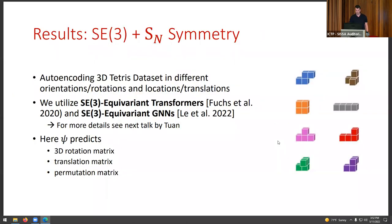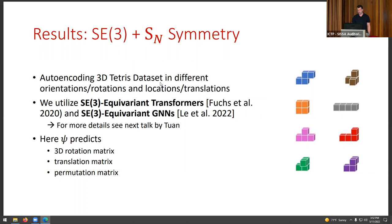A more complicated example is in three dimensions, where we also include the symmetric group to handle permutations. Here we look at a toy dataset of tetra shapes in three dimensions, encoding different orientations and rotations. We utilize SE(3)-equivariant networks like the transformers proposed by Fuchs et al. or equivariant GNNs developed by Tuan — who will talk more about them next. It's slightly more complicated here because we also have to predict not only the rotation but also the translation matrix and permutation matrix, as these are the group elements we want to be invariant to.